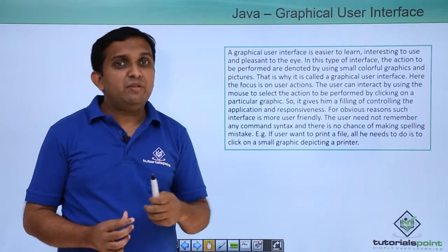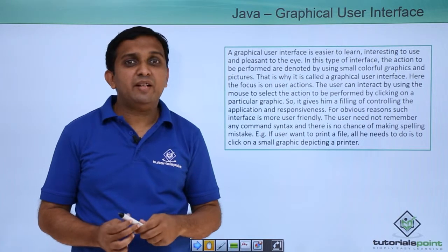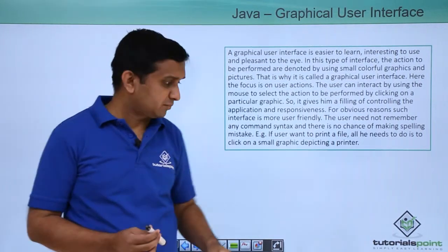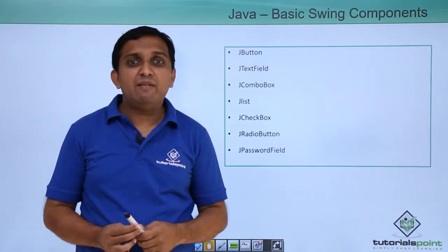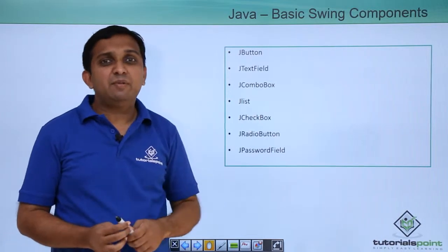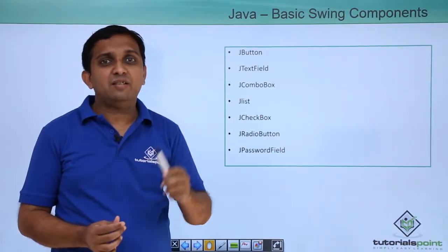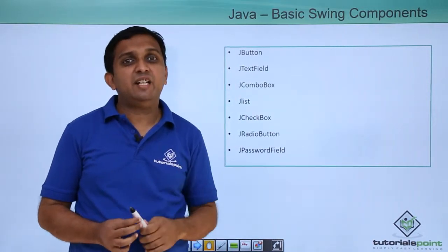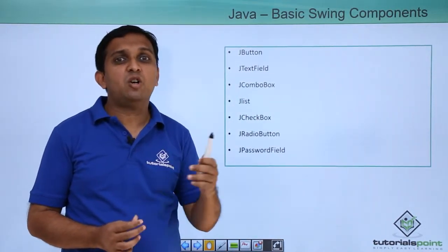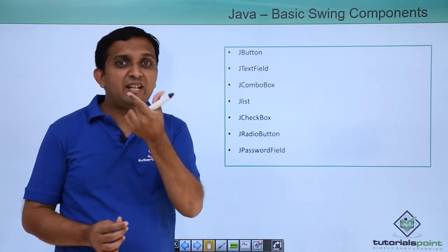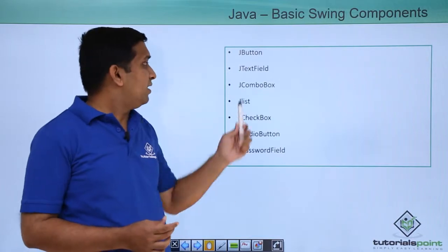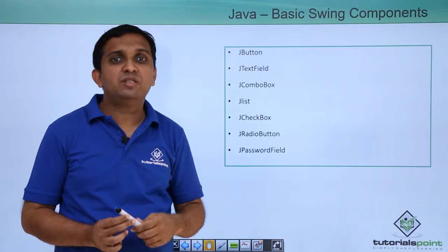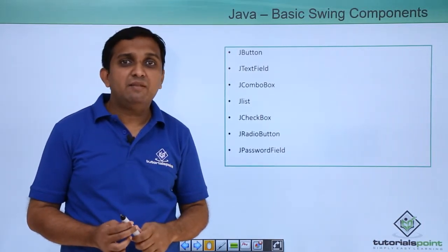In Swings, we have different components which represent elements on the screen. JButton represents a button, like an OK button or Cancel button. JTextField is there — for example, if you open an online form and enter your name, the area where you write is a text field. JComboBox is there; if multiple options are available and you want to select a particular option, you use a combo box.